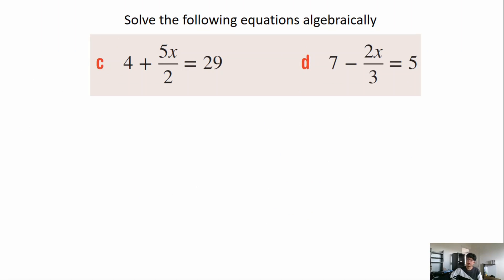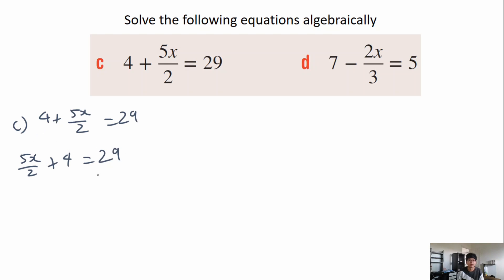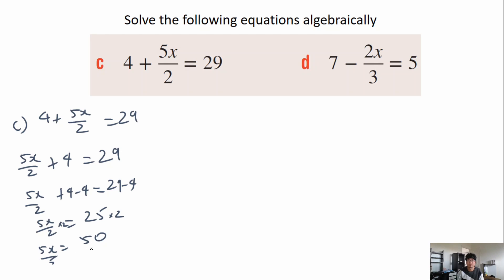A couple more questions that are a little bit trickier because terms are on the left. First: 4 plus 5x over 2 equals 29. Don't be confused — there's no sign in front of 4 so that means plus 4, the same as 5x over 2 plus 4 equals 29. Subtract 4 from both sides giving 5x over 2 equals 25. Multiply both sides by 2 giving 5x equals 50. Divide both sides by 5, giving x equals 10.